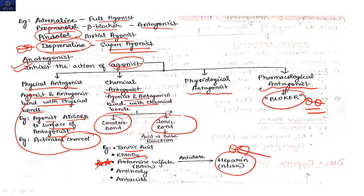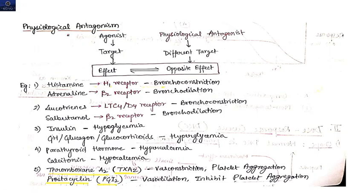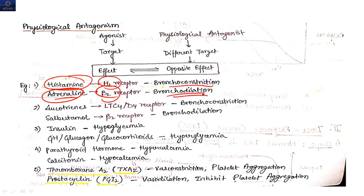In physiological antagonism, the agonist and antagonist act on different receptors but produce opposing physiological responses. For example, histamine acts on H1 receptors and causes bronchoconstriction, while adrenaline acts on beta-2 receptors and causes bronchodilation — so physiologically they antagonize each other. Similarly: leukotrienes vs salbutamol, insulin vs glucagon vs growth hormone, parathyroid hormone vs calcitonin, and thromboxane A2 vs prostacyclin.